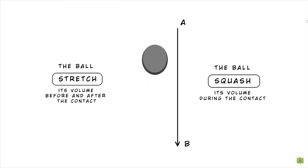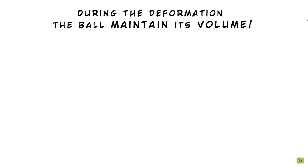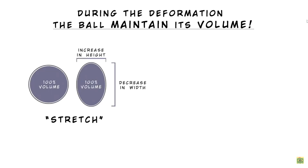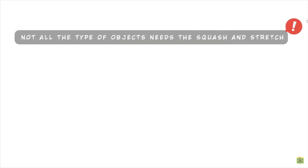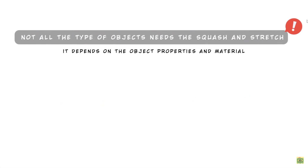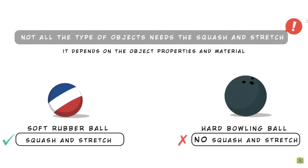This is reality. In animation, we can exaggerate to reach a more cartoon effect. But remember that the ball doesn't change its volume, it just deforms it. So during the stretch, the volume increases in height and decreases in width. During the squash, it increases in width and decreases in height. Keep in mind that not all types of objects need squash and stretch — it depends on the object's properties and material. A rubber ball can squash; a bowling ball doesn't squash.